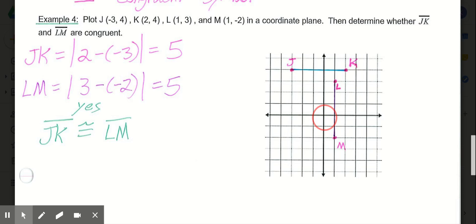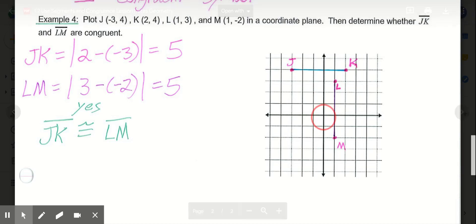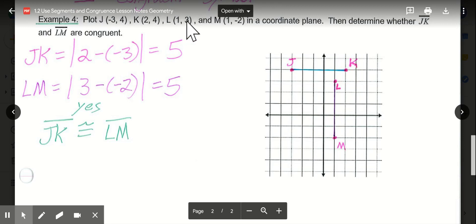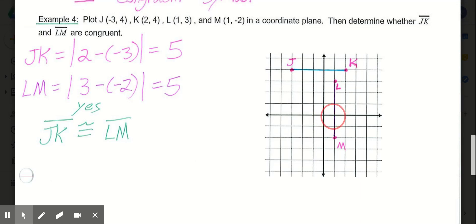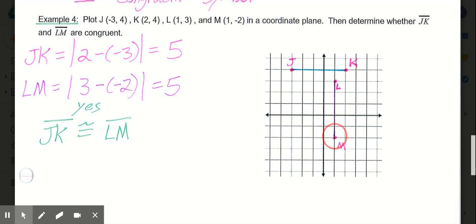For plotting J, we would go left 3 to negative 1, 2, 3, and then up 4, 1, 2, 3, 4. And that gives us J. For K, it's at a positive 2, positive 4. So again, we start at 0, 0. We go right 2, 1, 2, and up 4, 1, 2, 3, 4. And then L over 1, up 3. Both are positive, so we're going right and up. Again, start at 0, 0. Right 1, up 3. And then for M, it's a positive 1, negative 2. So we go right 1 and down 2.